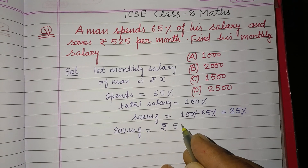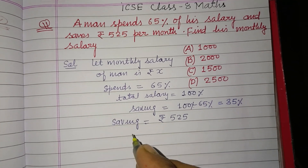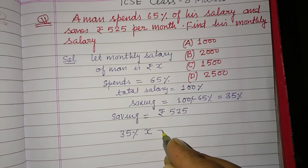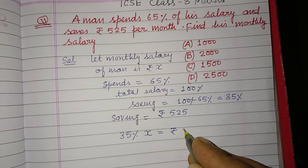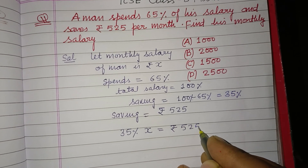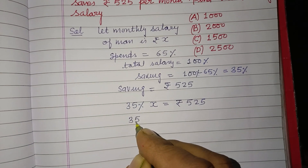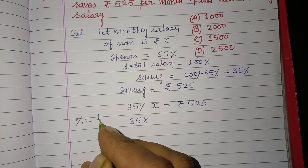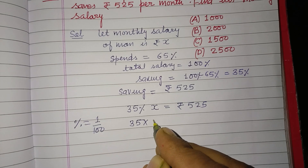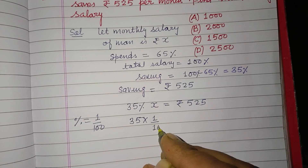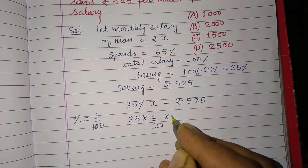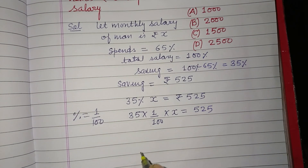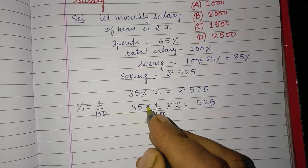His saving is rupees 525, which is 35% of his salary X. So 35% of X equals 525. Percentage means 1 upon 100, so we write 35 upon 100 into X equals 525.